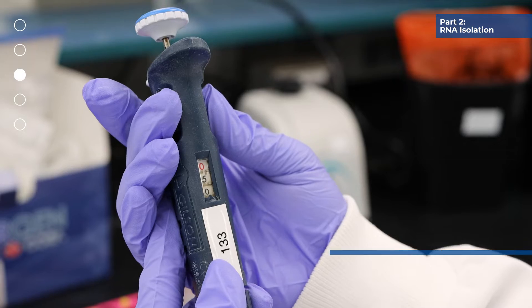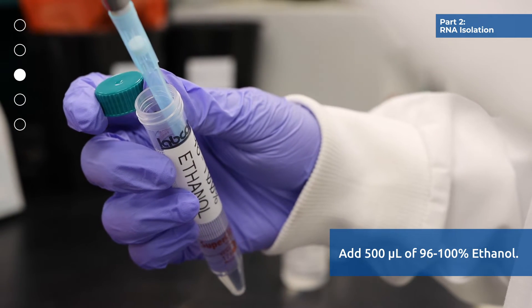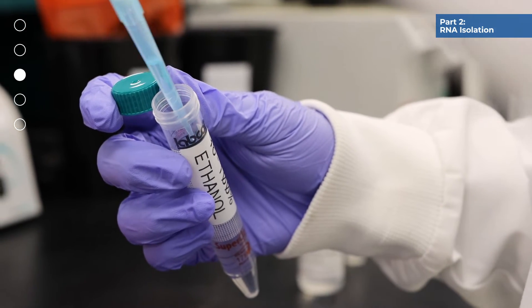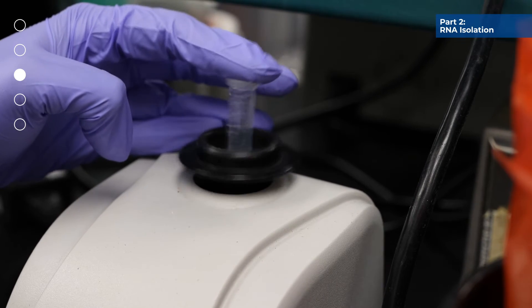After incubation, add 500 microliters of 96 to 100% ethanol to the mixture from step 2 and mix well by vortexing for 10 seconds.